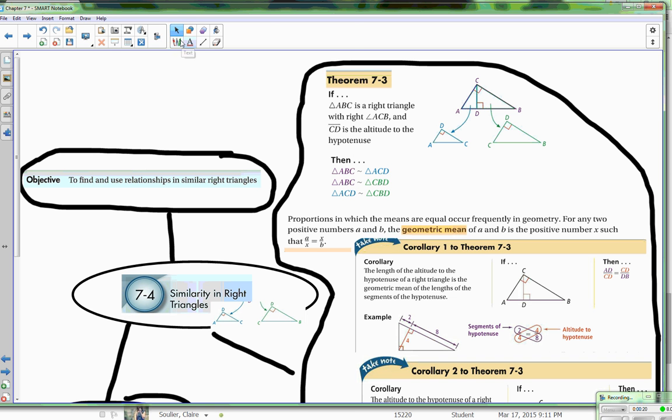The first item that we're going to talk about is theorem 7-3. If ABC is a right triangle and your right angle is ACB, then CD is the altitude.